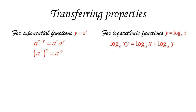Another property of exponents is that (a to the x) to the power y equals a to the x times y. From this, you can prove that the logarithm base a of x to the power y equals y times the logarithm base a of x. This is very important for us: it allows us to use logarithms to bring things out of the exponent, changing a power into a product — which will be very useful in many situations.